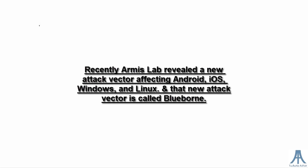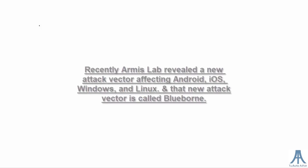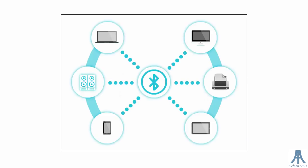Recently, Armis Lab revealed a new attack vector affecting Android, iOS, Windows and Linux, and that new attack vector is called BlueBorne. BlueBorne is an attack vector through which hackers can leverage Bluetooth connections to penetrate and take complete control over targeted devices.